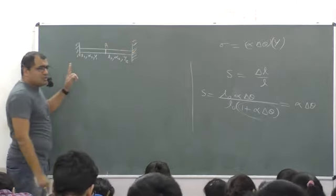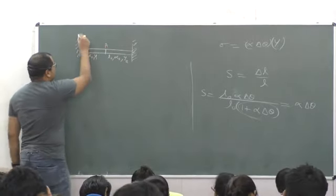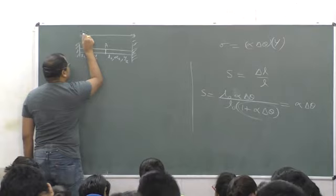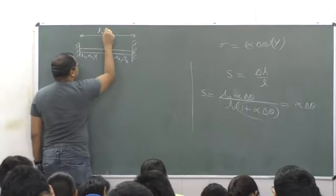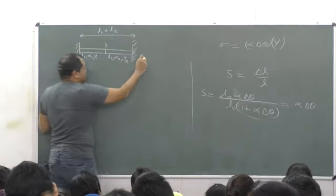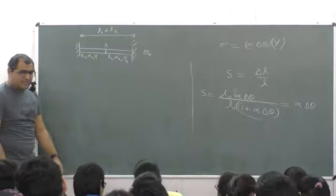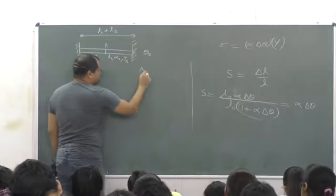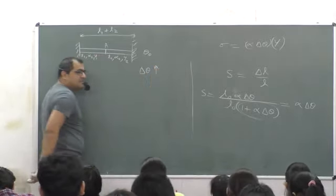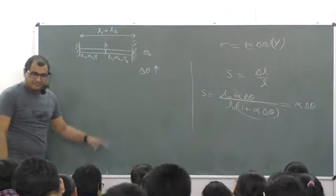Two rods, one of length l1 and one of length l2. These two rods, there are no expansion underneath them. n1 plus l2, in this time all the length - this length l1, this length l2 - if temperature changes by delta theta, then how much is the interface you are seeing?